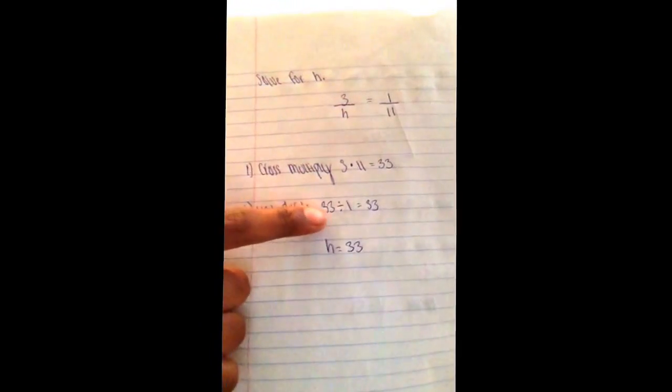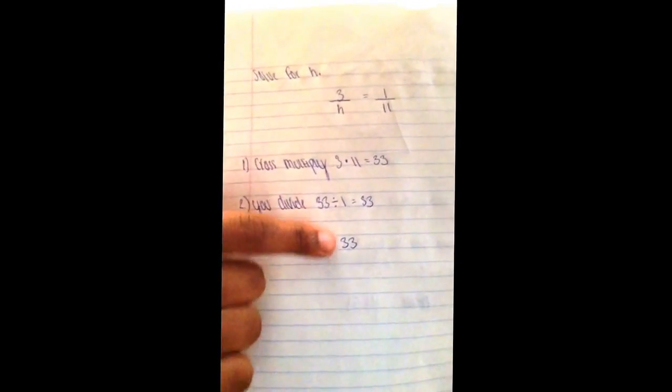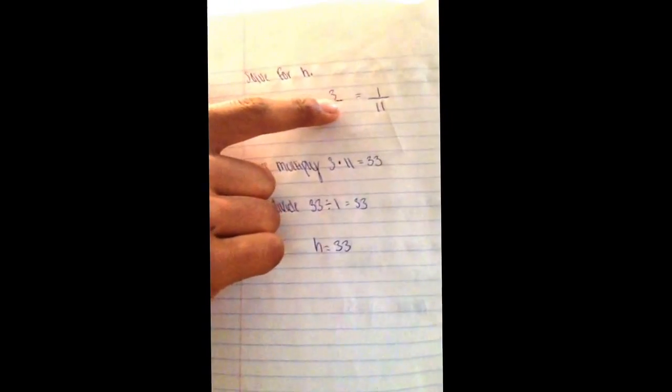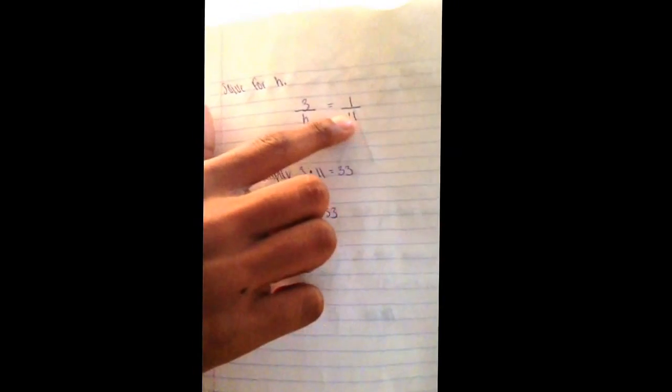Why did I divide it by 1? I divided it by 1 because when it's set up like this it's a proportion. So if you know anything about proportions, you know you cross multiply and then you divide it.